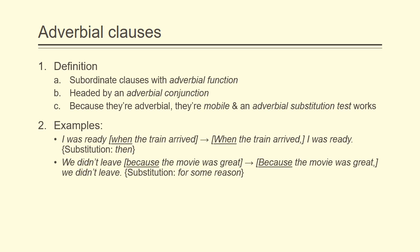So in this sentence, the order of elements can also be reversed, so that 'because the movie was great' begins the sentence, and then all we need is a comma. So: 'Because the movie was great, we didn't leave.' In this instance, the substitution test also works, but we need a slightly longer phrase, such as 'for some reason.' So: 'We didn't leave for some specific reason.' That reason is: because the movie was great.